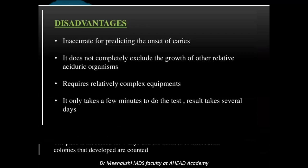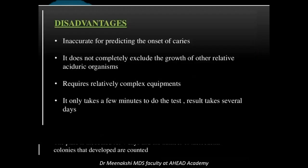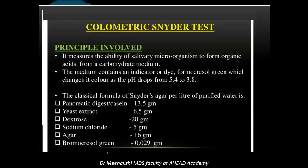The only disadvantage is that it is inaccurate in predicting the onset of caries, and it does not completely exclude the growth of other relative aciduric organisms. It takes only a few minutes to perform the test, though the result takes several days.